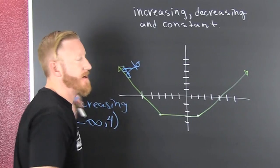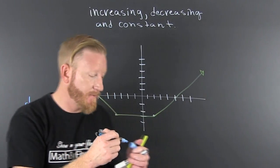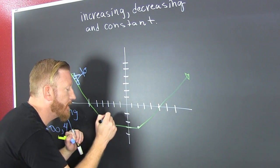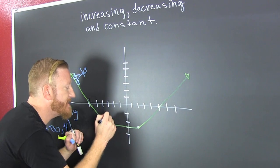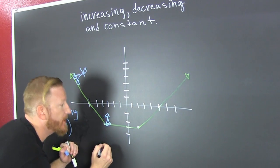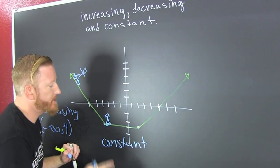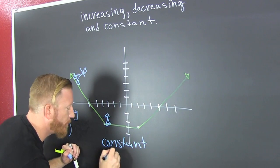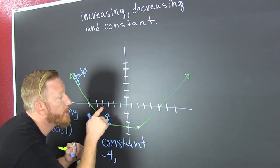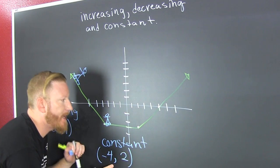Constant is where you have no change in your function — no change in your function, meaning that you're cruising along there, going constant. We're trying to learn math. So we're constant on what values of X? We're constant from minus four to two.